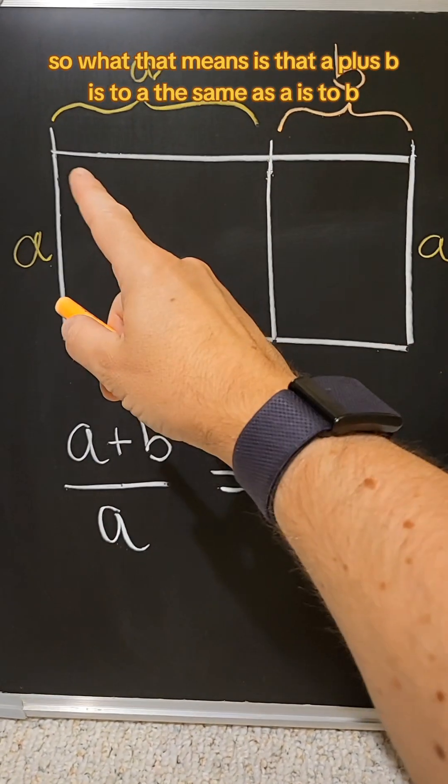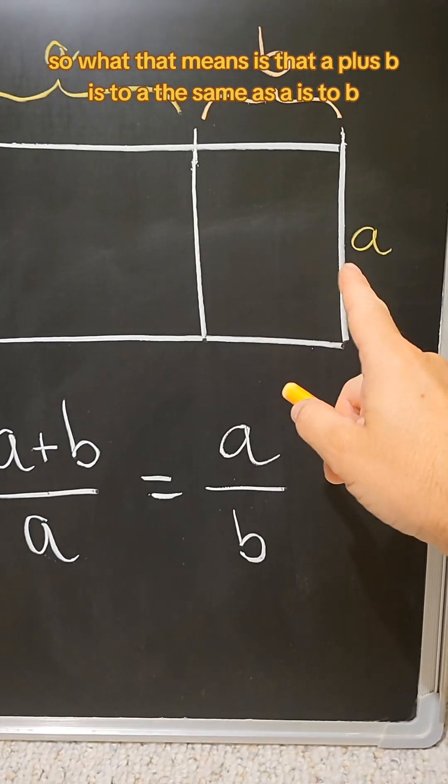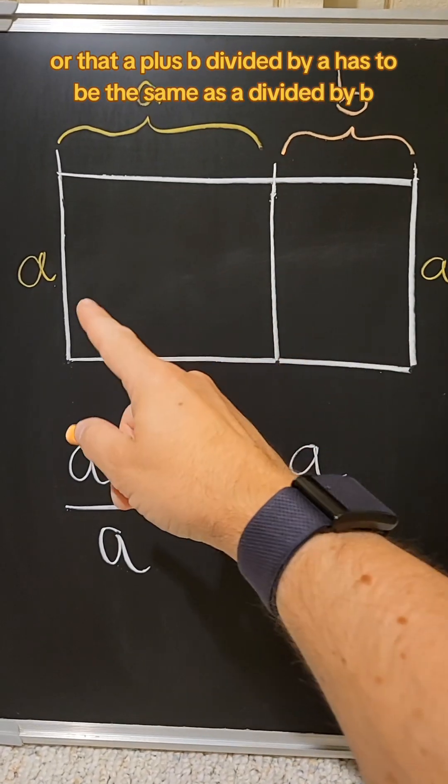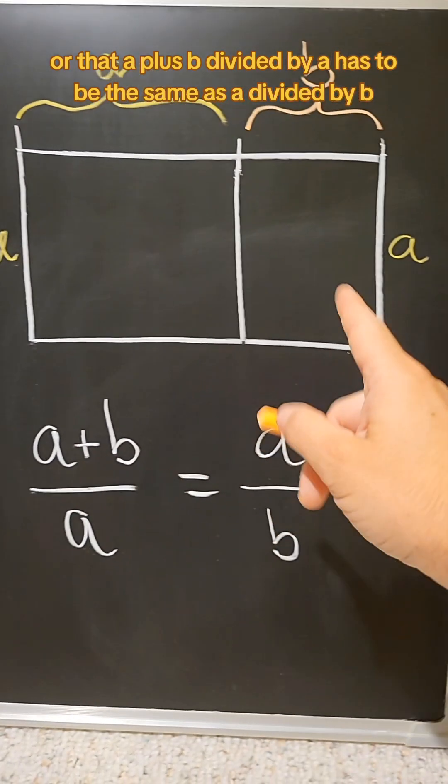So what that means is that A plus B is to A the same as A is to B. Or that (A + B) / A has to be the same as A / B.